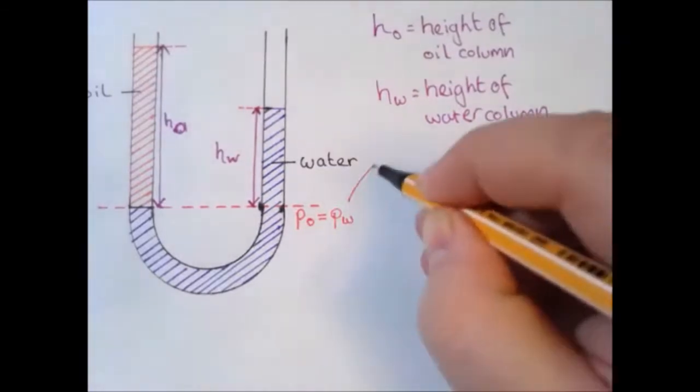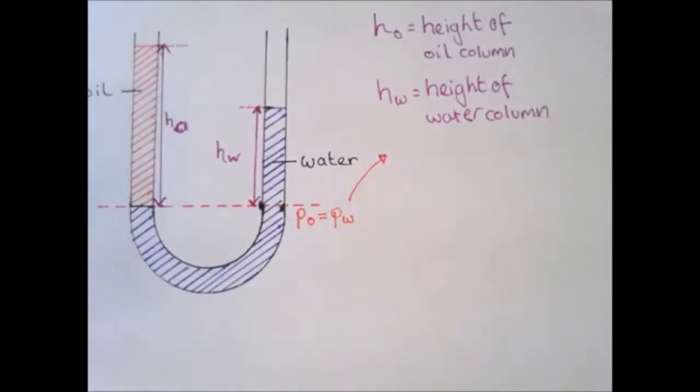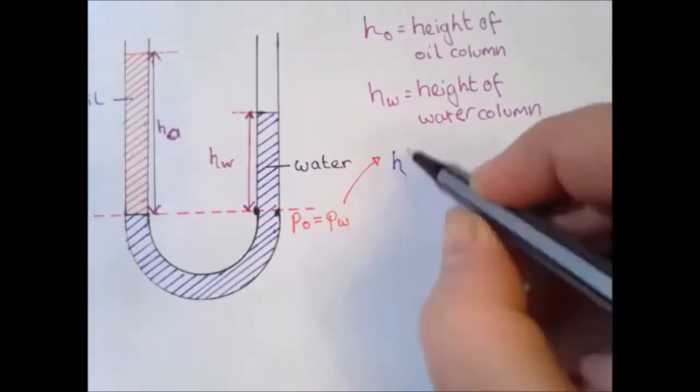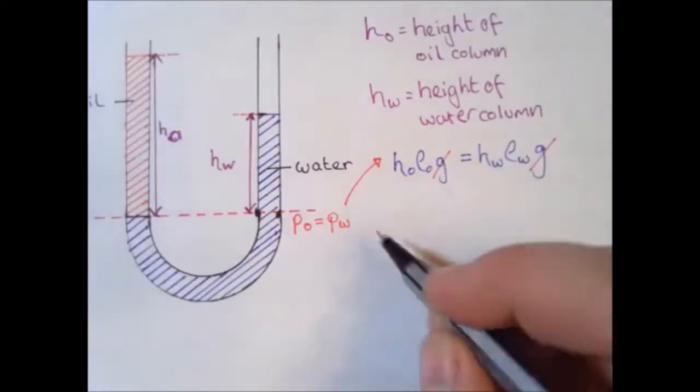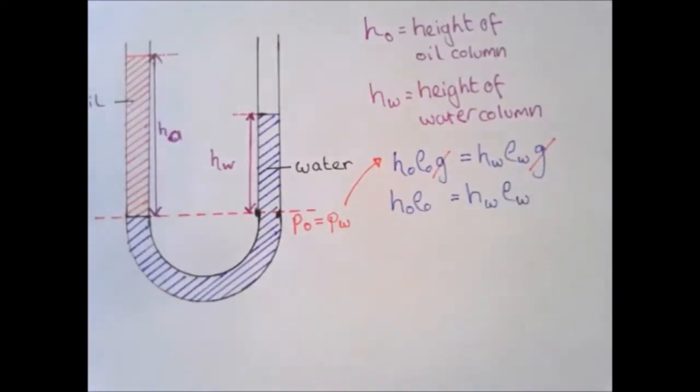Using the pressure equation for a column of liquid, we can then say that the height of the oil multiplied by the density of the oil multiplied by gravity is equal to the equivalence from the water. We can get rid of gravity straight away, gravitational field strength that is.